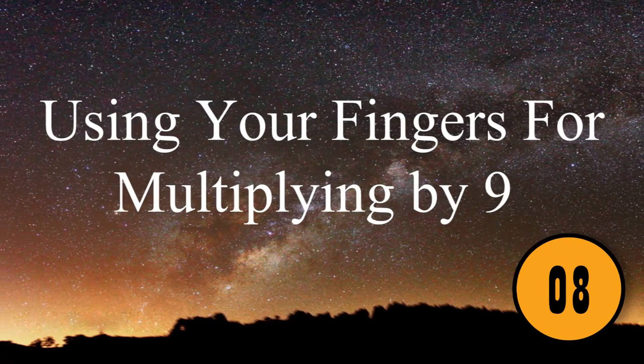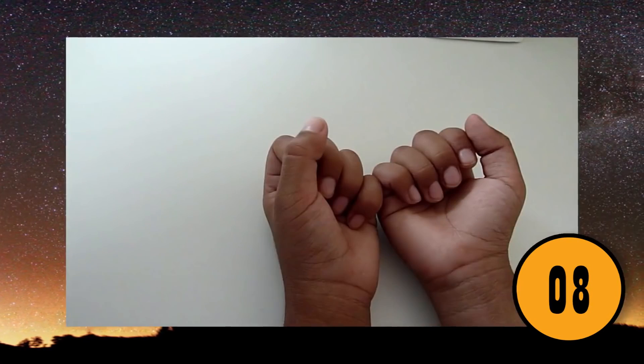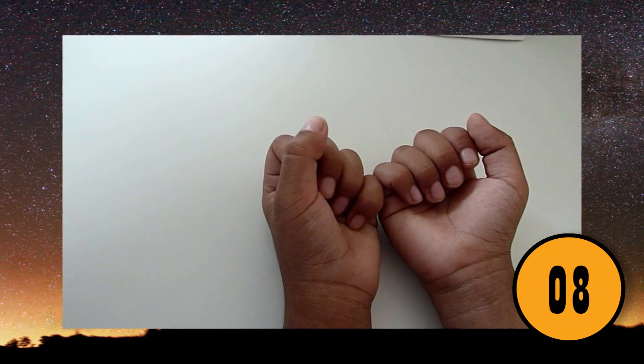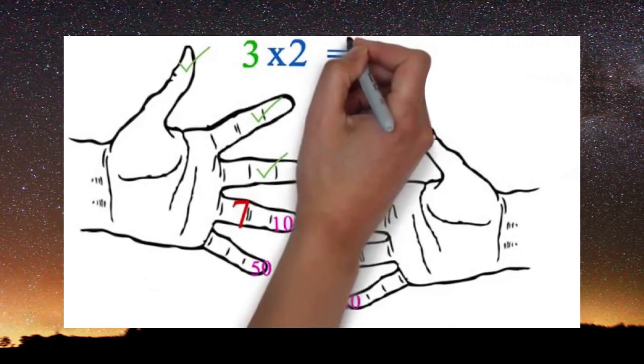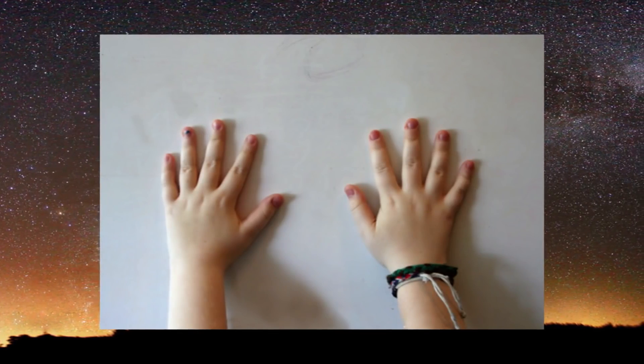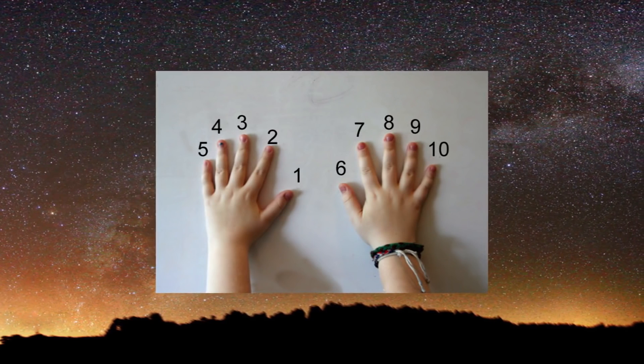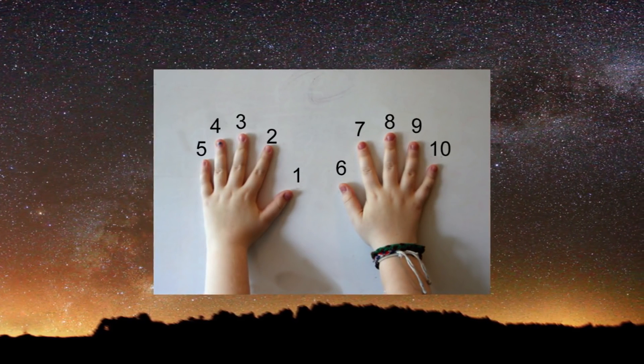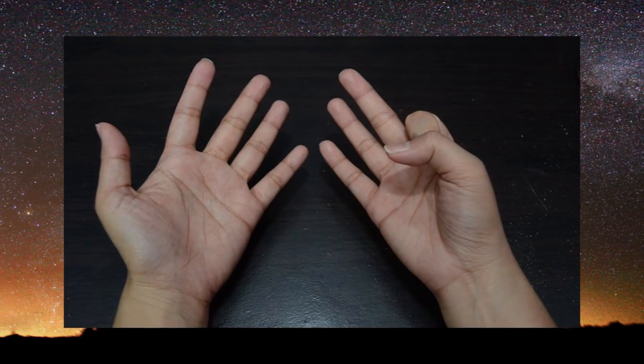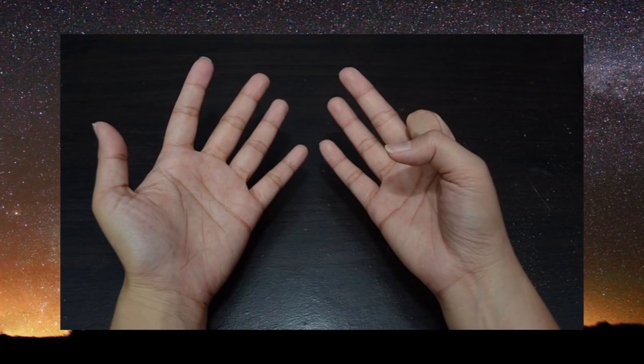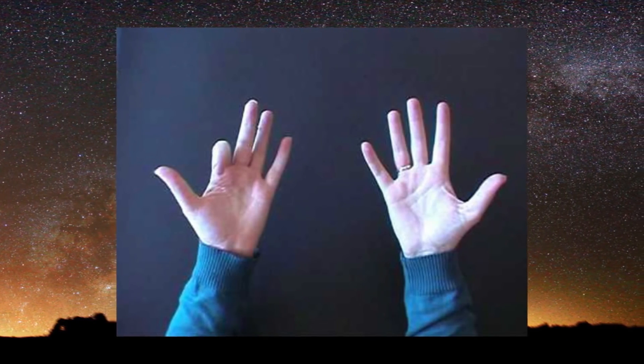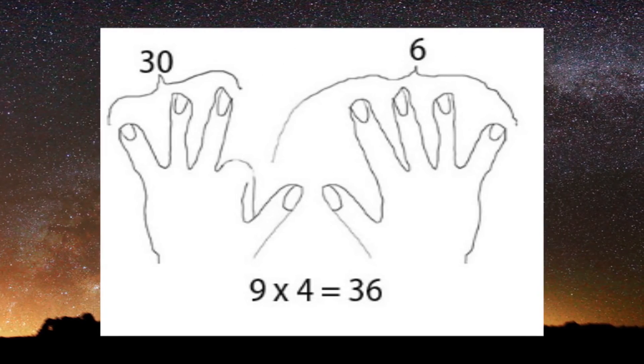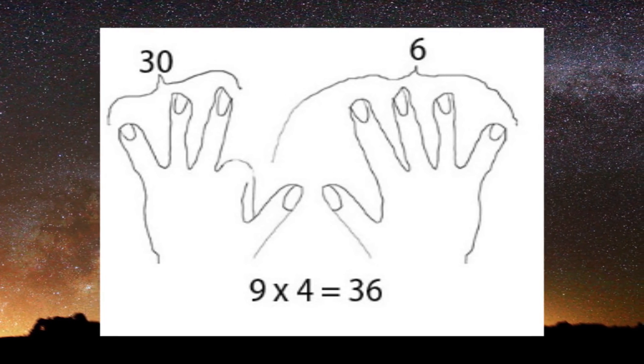Using Your Fingers For Multiplying By 9. You can do more than add and subtract using your fingers. You can also easily multiply by 9. You simply need to assign each finger on your hands a number. Holding your hands facing you, the thumb on your left hand would be 1, the index finger would be 2, and so on. If you want to figure out 9 times 4, you would fold your fourth finger down, which would be the ring finger of your left hand. To the left of your folded finger there are three fingers, which would be the tens. Next, count the fingers after the folded finger, and there are six. The answer would be 36.